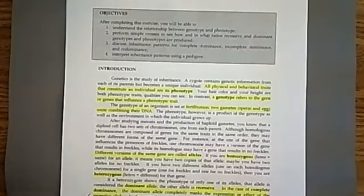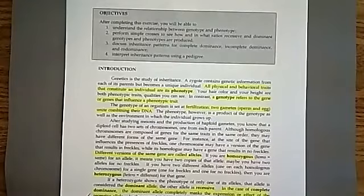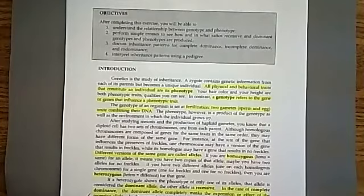The genotype of an organism is set at fertilization when two gametes — a sperm and an egg — unite combining their DNA. The phenotype is a product of the genotype as well as the environment. For example, you may be born with brown hair, but in your environment your friends are dying their hair so you also dye it — your hair now has blonde streaks. That environmental change to the phenotype is not something your genotype is dictating.